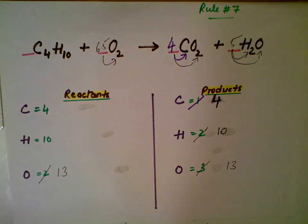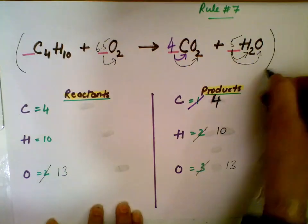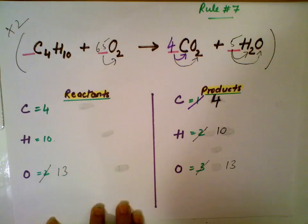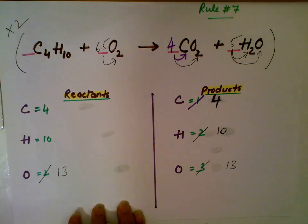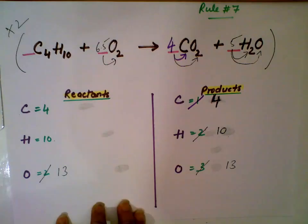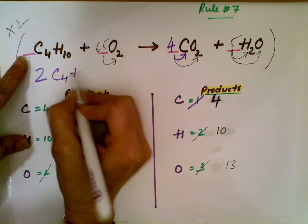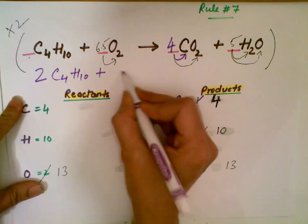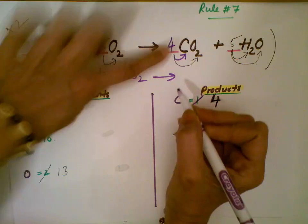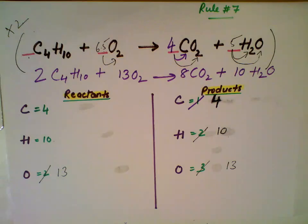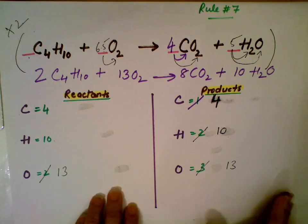However, rule number 7 says whenever you have coefficients as fractions, you multiply the whole equation by 2. So far I have coefficients 1, 4, 5, and 6.5. When I multiply the entire equation by 2, I get: 2 times 1 is 2, 2 times 6.5 is 13, 2 times 4 is 8, and 2 times 5 is 10. All I am doing is multiplying the coefficients — because we are not allowed to adjust the subscripts when balancing.